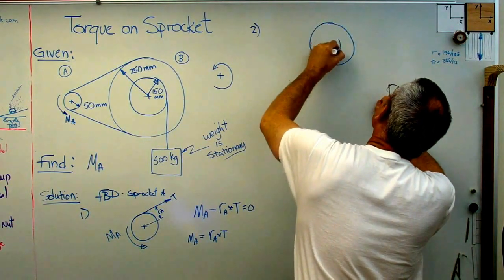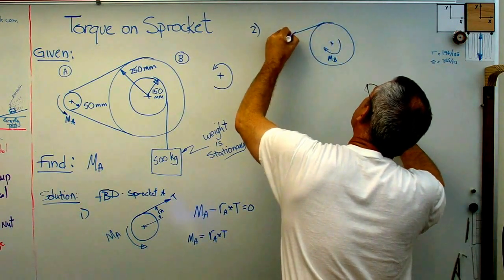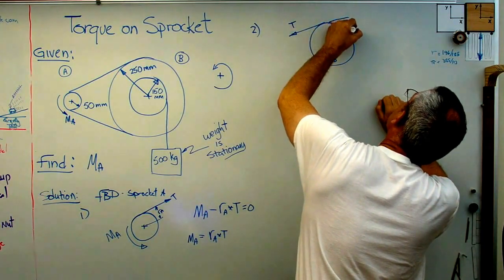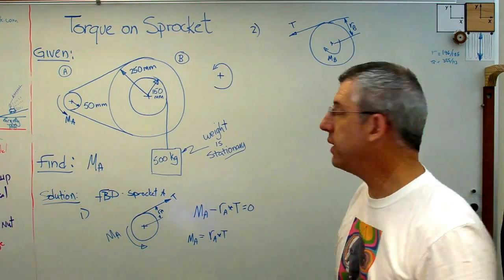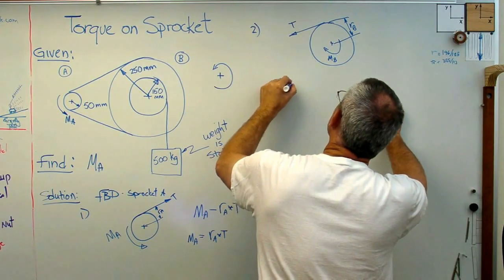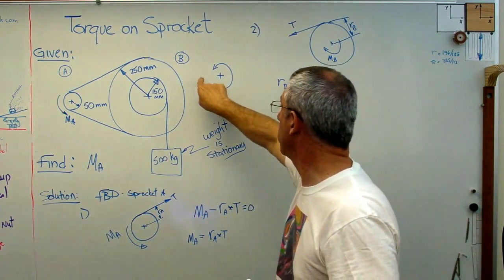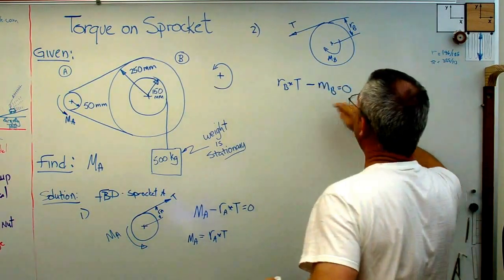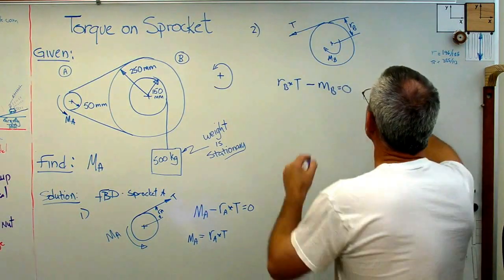Let me draw another free body diagram. And I've got a moment there I'll call MB. And I've got that same tension now pointing in the other direction. And I've got this radius B there. Okay, so I know what radius B is and I know what MB is. Okay, this is starting to shape up. So let's see, RB times t. Now it's going to go in a counterclockwise direction, so that's positive according to my sign convention. Minus MB equals zero. Okay, that's my statement that the moments about that center point are summed to zero. That's in static equilibrium.